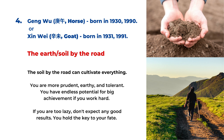The fourth type is the Geng Wu or Xin Wei years, for birth years 1930, 1931, 1990, and 1991. It's called the earth, or soil, by the road. The soil by the road can cultivate everything — that's the positive side. Your personality is more prudent, earthy, and tolerant. You have endless potential for big achievement if you work hard and develop your skills. But if you are too lazy, don't expect any good results. You are in control and you can decide your own fate.